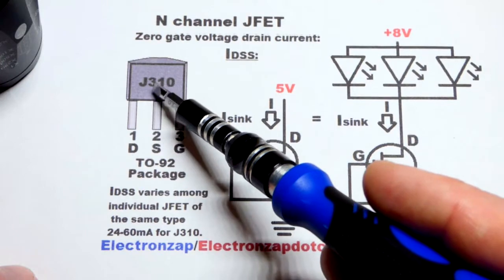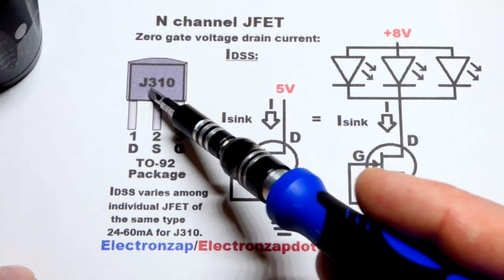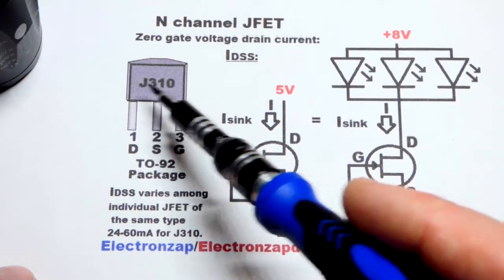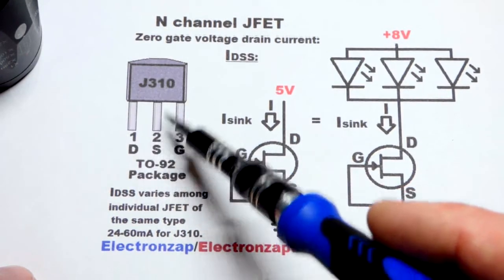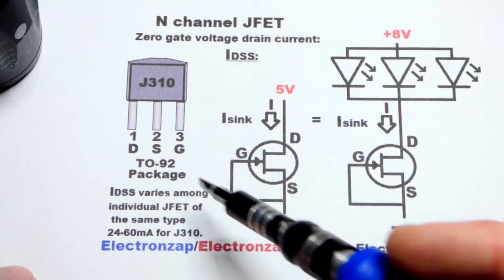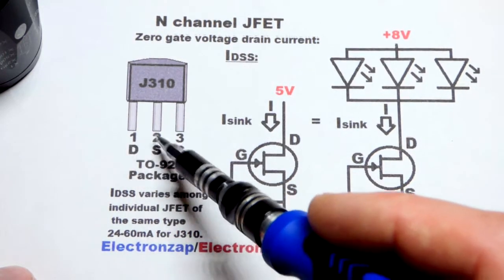For the N-channel JFET, a lot of that depends on the particular component that you're using. So we're going to use the J310. Here's the pin layout really quick. Drain to the left, source in the middle, and gate to the right. I should have wrote them out, but in any case, that's what it is. Drain, source, gate.